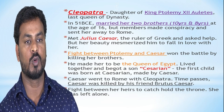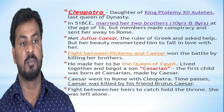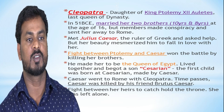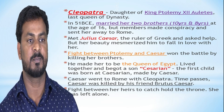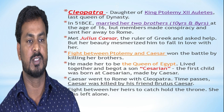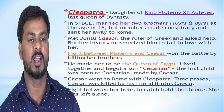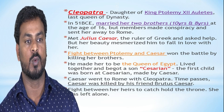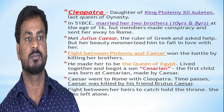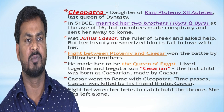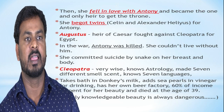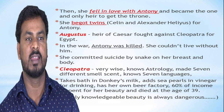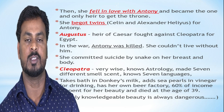Caesar went to Rome and claimed power. After some time, Caesar was conquered — killed by his friend Brutus. There was a fight among her rivals to claim the throne. She was left alone. Then she fell in love with Antony and became one whose only aim was to gain the throne.